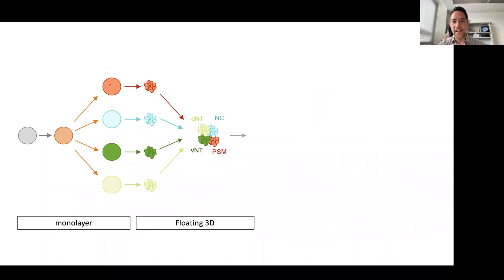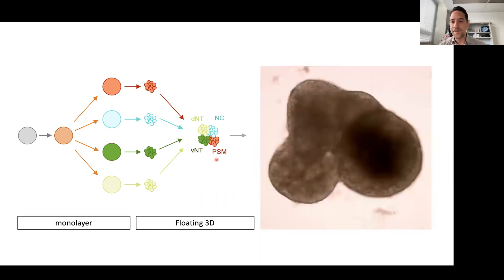I'll then take a monolayer and dissociate it and put the cells in a U-bottom well so they aggregate into a sphere. So this would be a sphere of the pre-somitic mesoderm differentiation, or the neural crest or the ventral and dorsal neural tube. After these spheres have formed, we then simply place these spheres next to one another. The spheres then fuse and this is what it looks like.